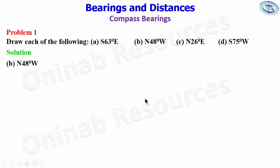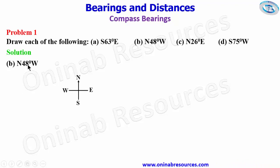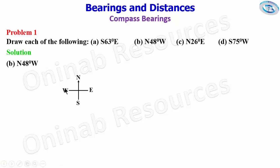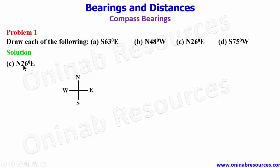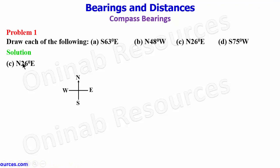We go to B: north 48 degrees west. We draw our cardinal points. This is north-western direction, so we move to the western direction from the north by 48 degrees and draw the line. For C: north 26 degrees east, we still have our cardinal points. This is north-east, so we start from the north and move towards the east an angle of 26 degrees, then draw the line — that is the diagram for C.